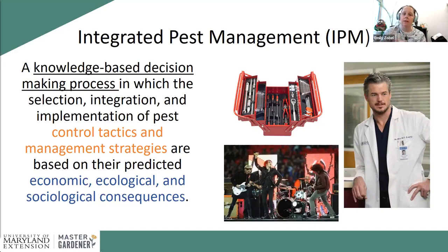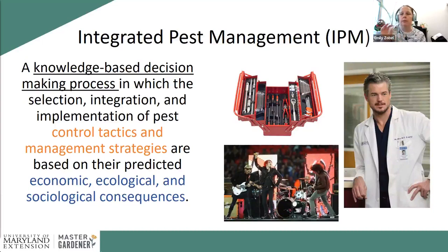I like to compare IPM to a medical system. We do a lot of things — eating healthy, drinking water, exercising — to prevent large medical issues from arising. It's the same in your garden: harvesting promptly, cleaning your tools, getting a soil test, watering properly can reduce the likelihood of many issues. That allows your plants to outgrow minor feeding damage from beetles or caterpillars, and can really reduce fungal diseases.